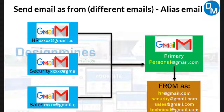You can reply as HR@gmail.com, as security@gmail.com, and as sales — all using your personal Gmail account. The 'from' address shown to the receiver will be HR@gmail, security@gmail, or sales@gmail — it will not show your personal Gmail account. Basically, you are changing your 'from' address and sending as HR, security, or sales. This is called an alias email or 'send email as a different from address.'